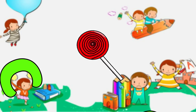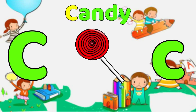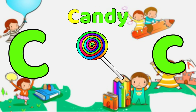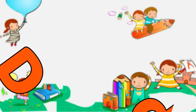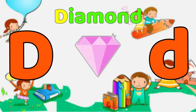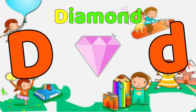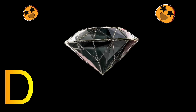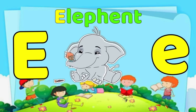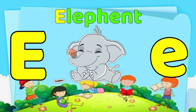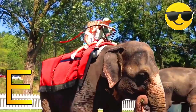C is for Candy. C, C, Candy. D is for Diamond. D, D, Diamond. E is for Elephant. E, E, Elephant.